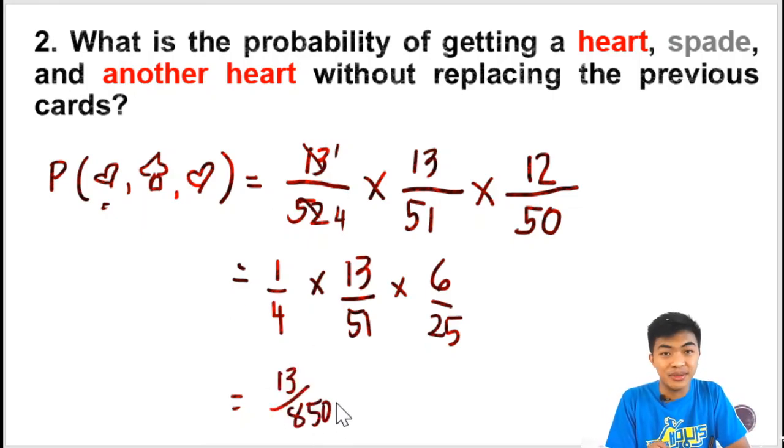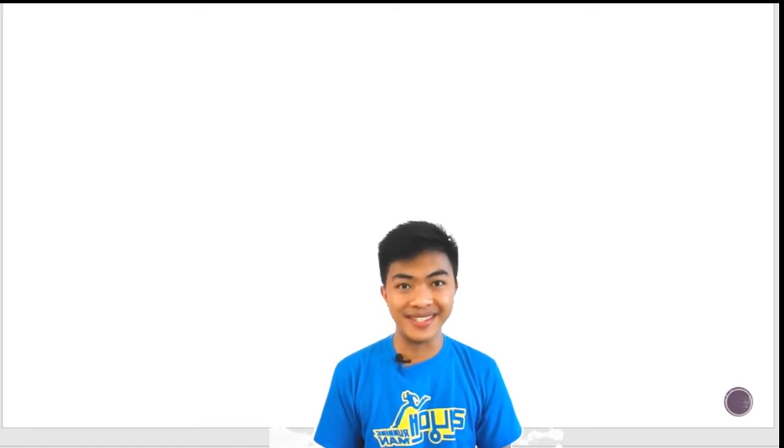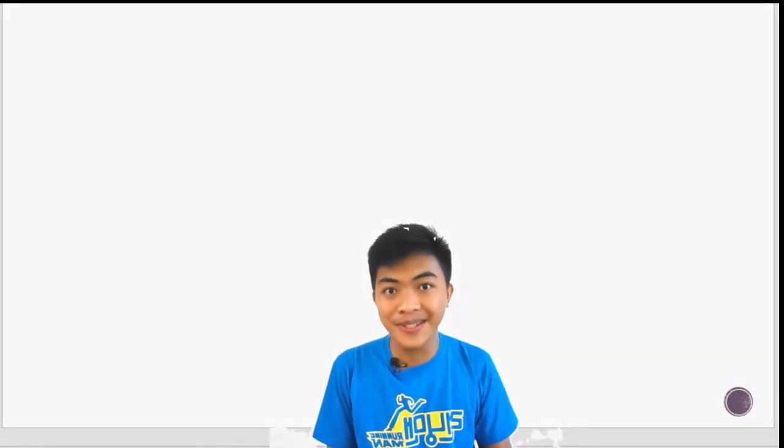This probability is very small, so this outcome is unlikely to happen. That is all for today, guys. I hope you now know the difference between independent and dependent events. Thank you for watching. See you in the next video. Bye.